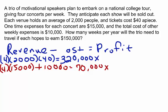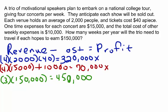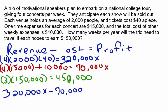Now we take a look at the total profit that the trio hopes to make. They each want to earn $150,000, and there are three people. Three times $150,000 equals $450,000. We're ready to set up our equation: revenue, $320,000X, minus costs, $70,000X, equals $450,000.